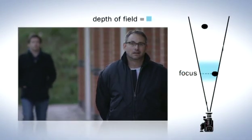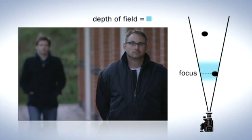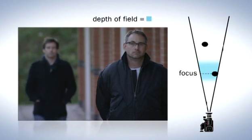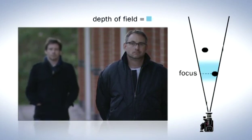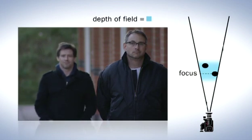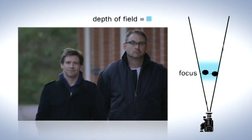In low light conditions, the depth of field is at a minimum. This is because the lens aperture is fully open, so as to allow as much light as possible through to the camera sensor.